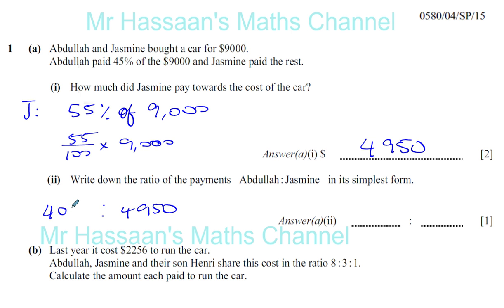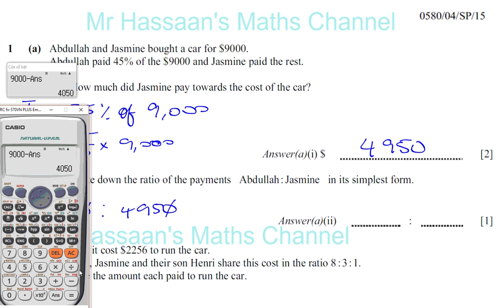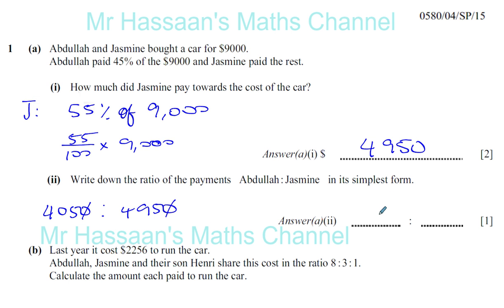We've got to reduce this to its simplest form. We can divide by 10 first, so it becomes 405 to 495. We can divide by 5 and continue dividing until we get to its simplest form. To save time, as you're allowed a calculator, you could just do $4,050 divided by $4,950, and it gives it to you as a fraction which is the ratio in simplest form: 9 to 11.